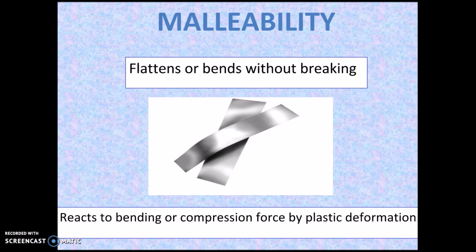Malleability is not to be confused with ductility. Ductility is something that can be stretched. Malleability is something that can be flattened or bent without breaking. Here's an example of metal strips. It reacts to bending or compression forces by plastic deformation as well, meaning that its shape is permanently changed.